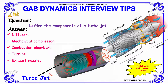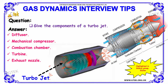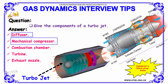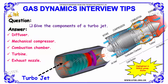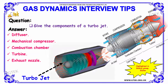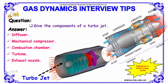Next question: give the components of a turbojet. The components are: first, diffuser; second, mechanical compressor; third, combustion chamber; fourth, turbine; and the final one is exhaust nozzle. These are the components of a turbojet.